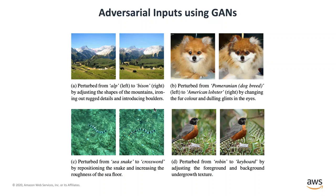Here's work about using a trained neural network to produce test inputs — specifically adversarial inputs that trigger a neural network to deliver a wrong classification. Looking at some example images: on the left, an image correctly classified as something, and on the right, classified as a bison. Another example: a sea snake which turns into a crossword. These inputs have been generated automatically by tooling designed to produce adversarial cases.